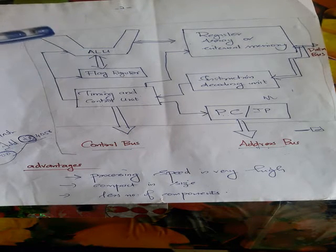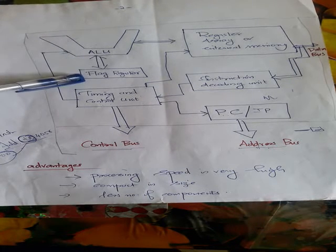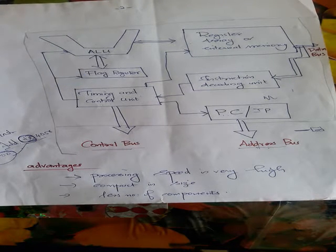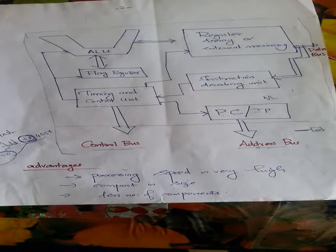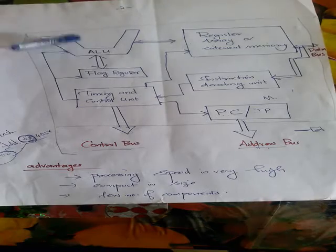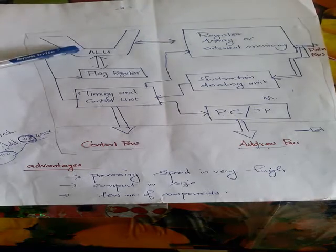The various conditions of the result will be stored as status bits in the flag register. For example, one of the bits of the flag register will be the sign flag. It will be storing the sign of the result of the operation done in the ALU.